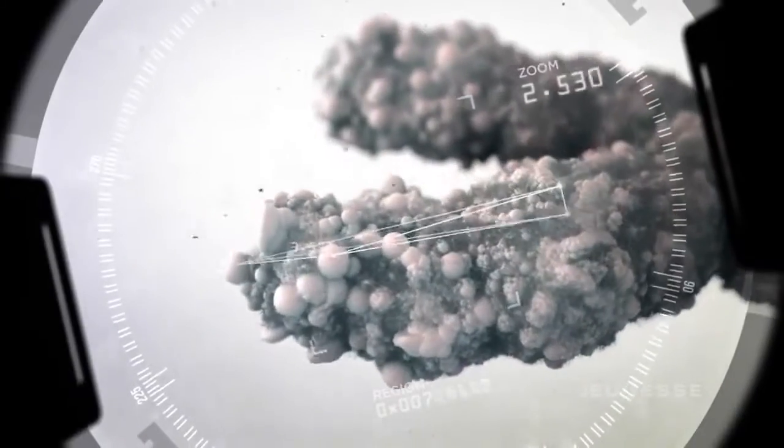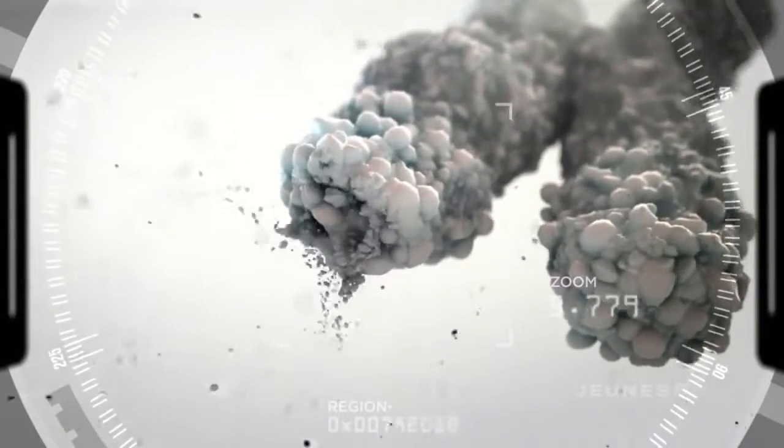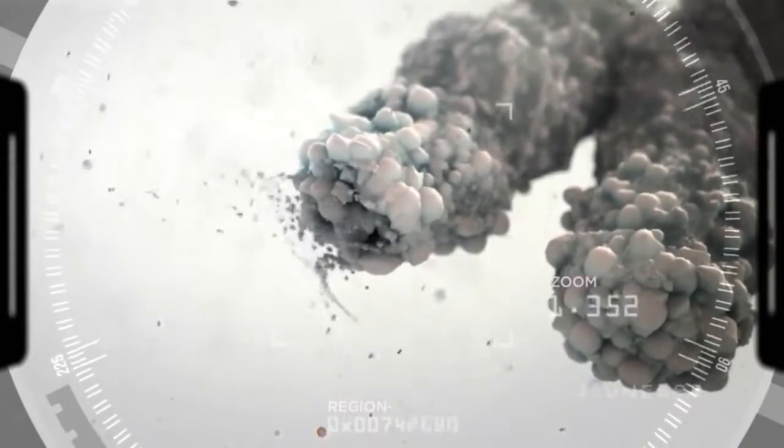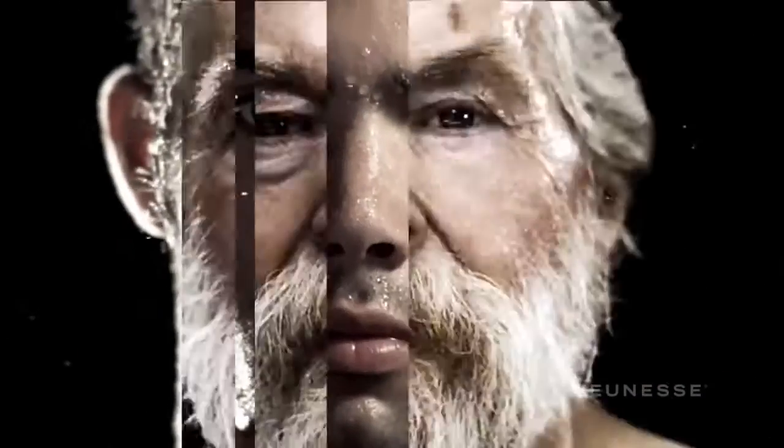When we are born, our telomeres are long, but as time goes on, they begin to shorten. So short, in fact, that our telomeres fray, similar to the end of a shoelace, and our journey called cellular aging begins.